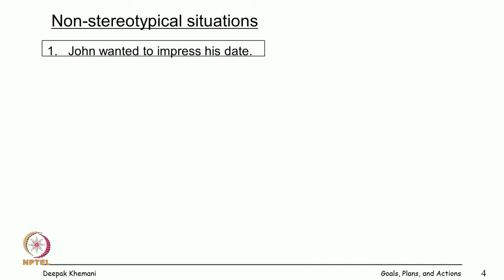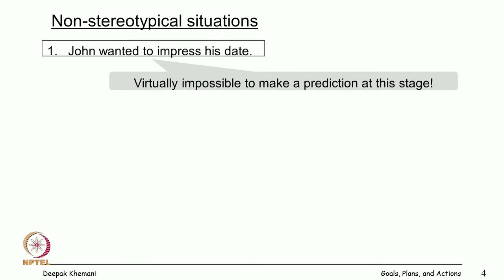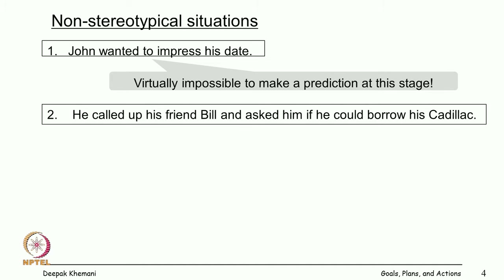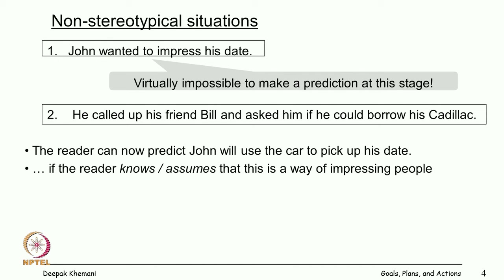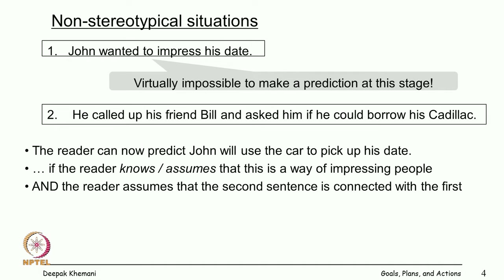For example, if you hear the line 'John wanted to impress his date,' it is practically impossible to predict what is likely to happen next. But if you read the second line — that he called up his friend Bill and asked if he could borrow his Cadillac — then you can predict that John probably used the car to pick up his date, if you know that driving an expensive car is a way of impressing people.